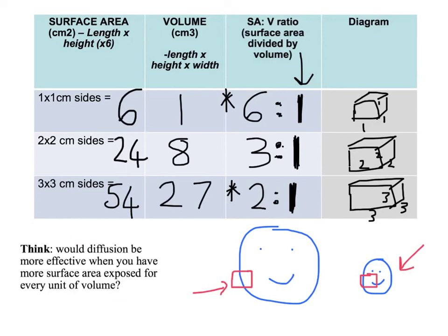Now in part two of this video - I'm going to split it into two - we're going to look at four very classic examples of diffusion in biological systems.